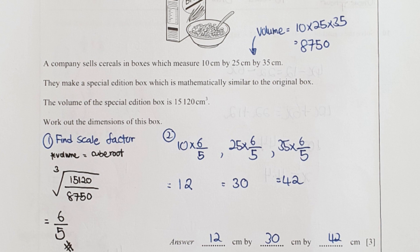For question 12, first thing I found the volume by taking 10 times 25 times 35, which is 8,750. I find the scale factor by taking the cube root of 15,120 divided by 8,750, so your scale factor is 6/5. Then I calculate the dimension of this box by taking 10 times 6/5, 25 times 6/5, and 35 times 6/5. It is 12, 30, and 42 respectively.